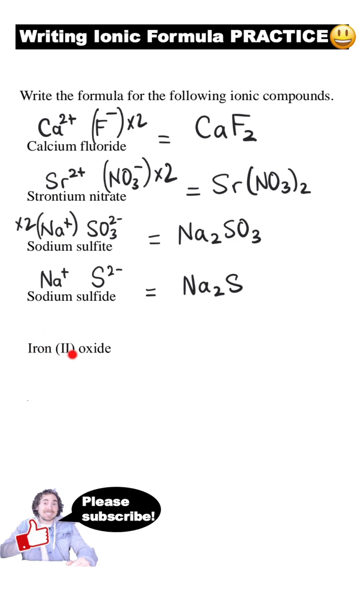Finally, iron is a transition metal. So this Roman numeral tells me that this iron has a two positive charge. Oxide has a two negative charge, and so it's FeO.